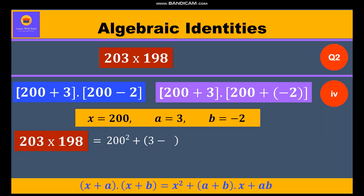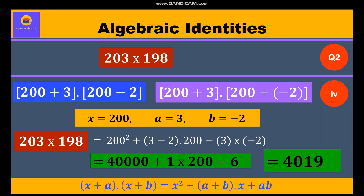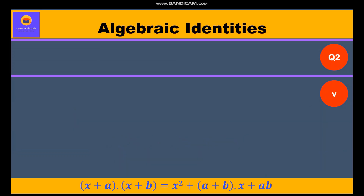We get 200 whole square plus (3 + minus 2) into 200 plus 3 into (minus 2). Further, we solve: 40,000 plus 1 into 200 plus (minus 6), giving us 40,194. Now let's move to question number 5.